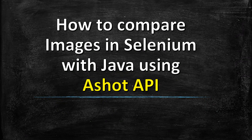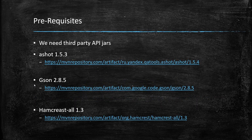Hello everyone, welcome. In this video I'm going to show you how to compare images in Selenium with Java using AShot API. By default, Selenium doesn't have any classes available to capture screenshots and compare them, so we need to depend on a third-party API called AShot. We'll see how we can capture images for specific elements like logos and how we can compare them. To do this we need to download three third-party JARs: AShot, Gson, and Hamcrest.